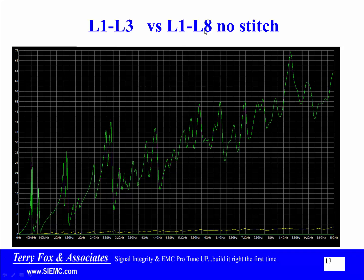On the other hand, if I go from L1 to L8 — with L2 as the ground reference and L7 also typically as a ground — but the stitching via is a couple of inches away, even down at 400 megahertz I've got a resonant peak almost at 32 ohms.